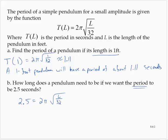The first thing I'm going to do is isolate the L over 32. I need to isolate the square root of L over 32, so I'll divide by 2π.